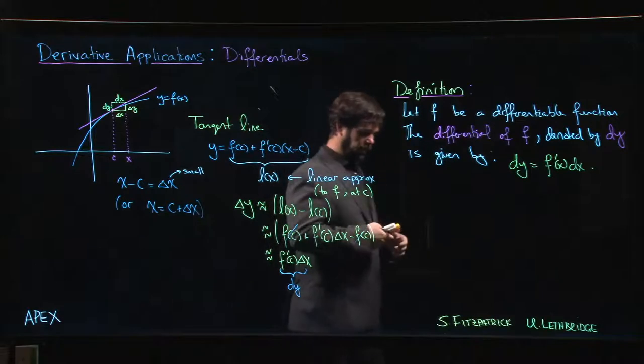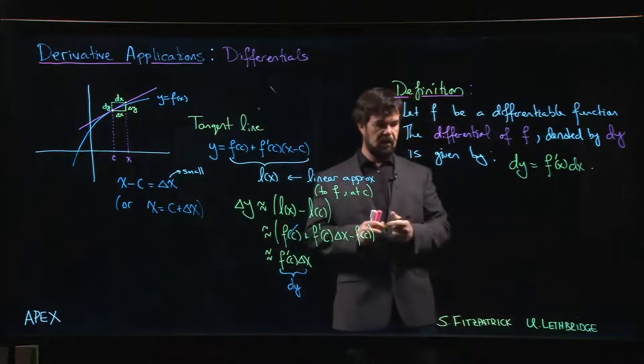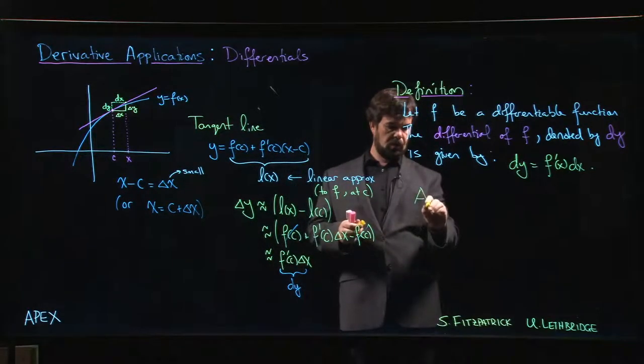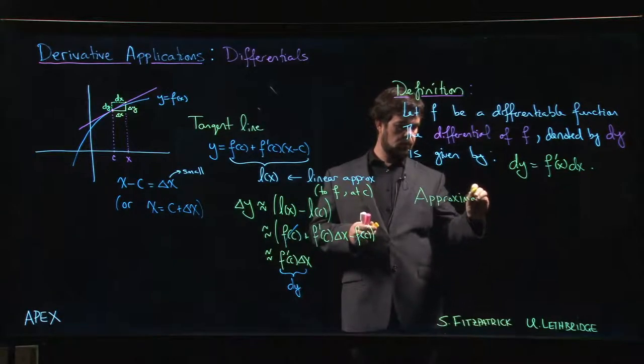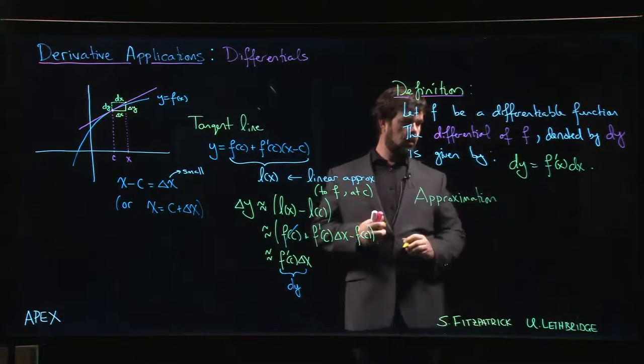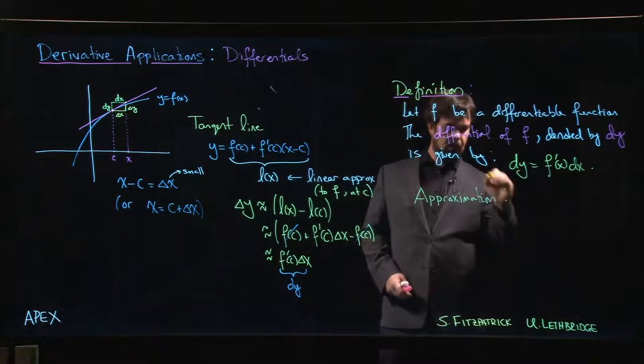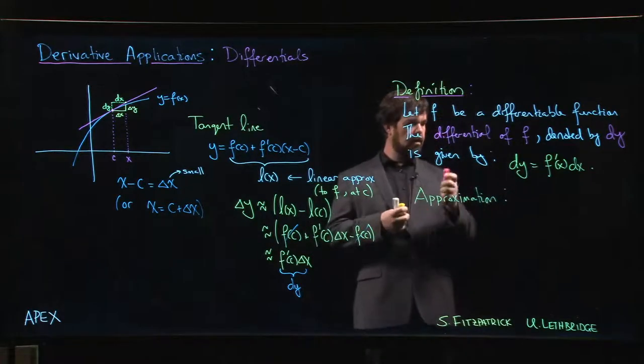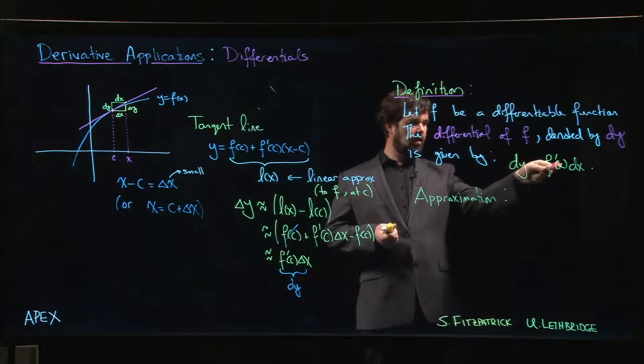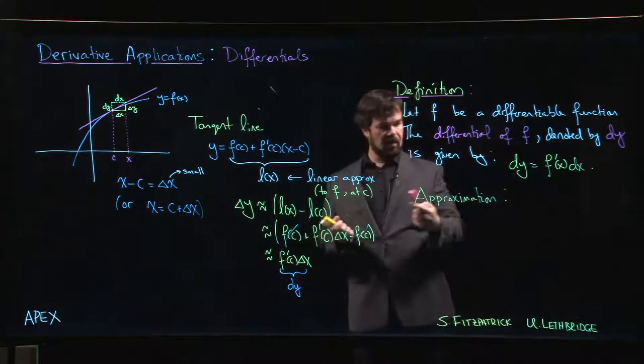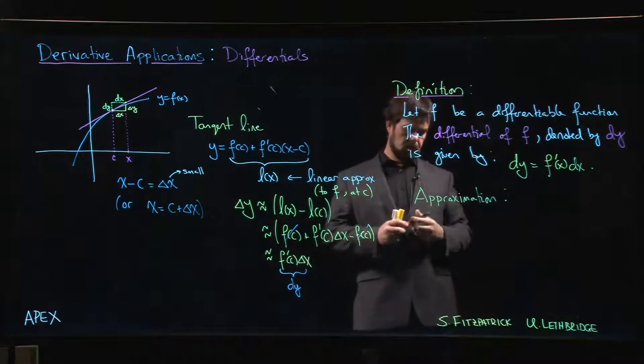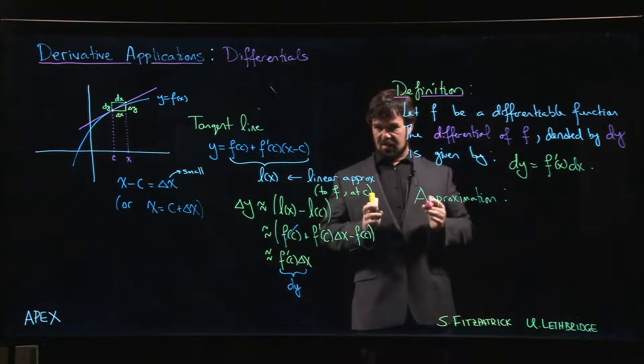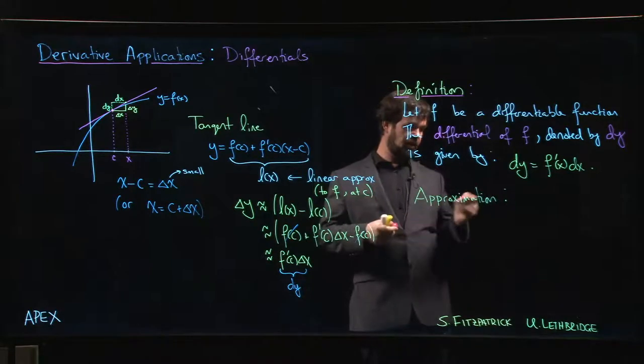So the whole point here is that we have this approximation. So our approximation is going to be given by, and we usually don't put an argument in here. We don't necessarily put in a c value. We do write F prime of x here, even though over here we have F prime of c. We kind of play a little bit loose with the notation here, and generally the context kind of keeps us out of trouble.